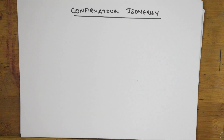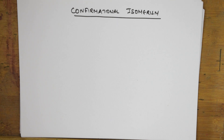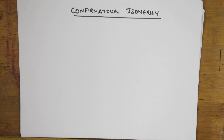Welcome back to one more session of general organic chemistry. I've taught you different types of isomerism — structural isomerism including chain, positional, functional, metamerism, and tautomerism. I've also taken you into stereo isomerism, covering optical isomerism, specific rotation, enantiomers, diastereomers, and DL as well as RS nomenclature. Now we'll be coming to the last type of isomerism, that is conformational isomerism.